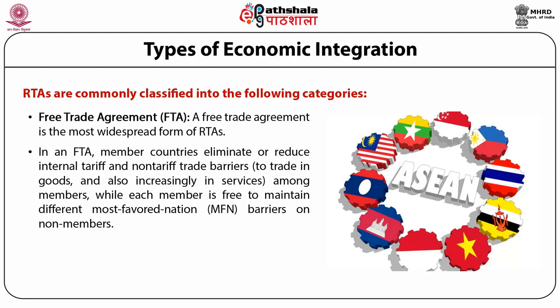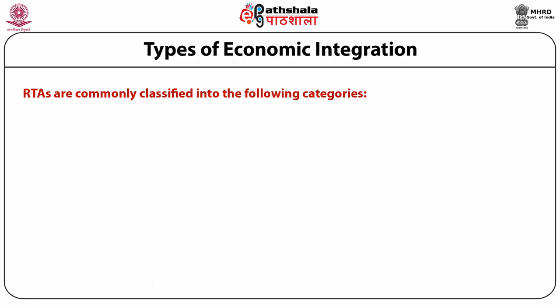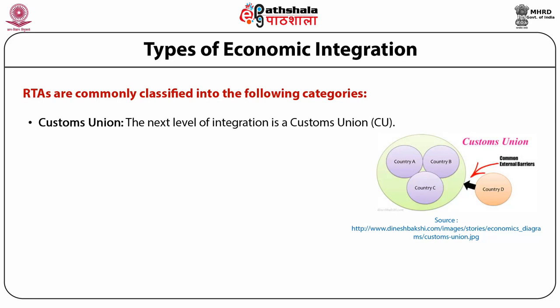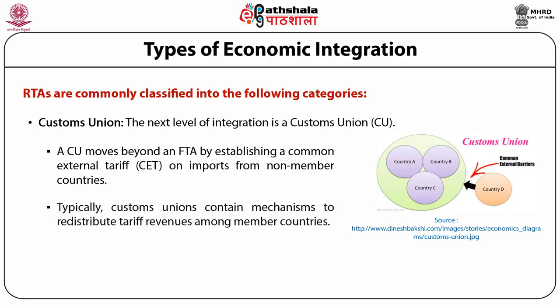Different types of economic integration include free trade areas, which remove most favored nation barriers on non-members. The best known free trade agreements are the European Free Trade Association, the North American Free Trade Agreement, and the Association of Southeast Asian Nations. The next level of integration is a customs union, which moves beyond an FTA by establishing a common external tariff on imports from non-member countries. Customs unions typically contain mechanisms to redistribute tariff revenues among member countries.